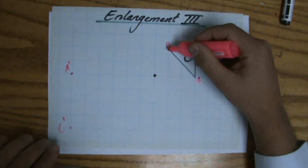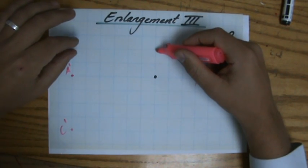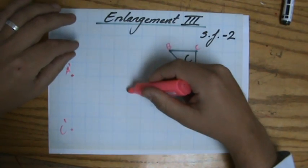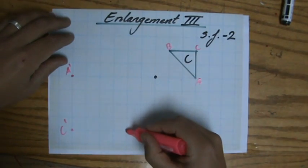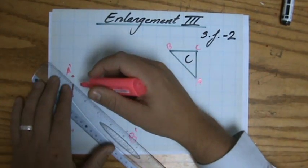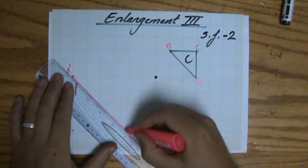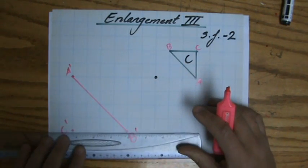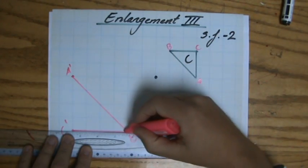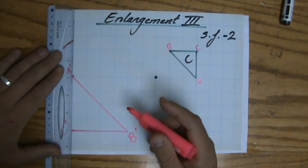And point B: 1, 1, 2 becomes 2, 1, 2, 3, 4 over there. So with a negative scale factor for enlargement, you just go to the other side of the center of enlargement, but twice as big in this case.